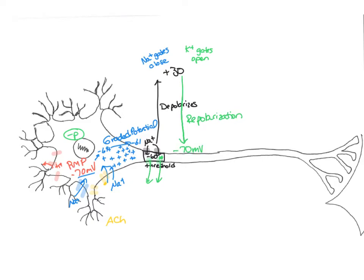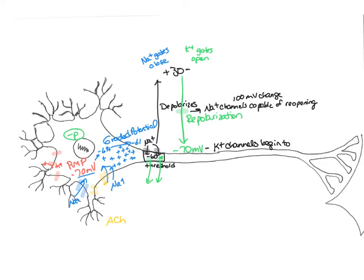Midway between positive 30 and negative 70 millivolts — a 100 millivolt change — there will be a point where the sodium channels become capable of opening again, even though they're still closed. This is the beginning of the relative refractory period, where another charge could cause another action potential but would probably take a bigger stimulus. At negative 70 millivolts, the voltage-gated potassium channels begin to close. Since they don't close at the same time, potassium continues to leak out and the charge drops to negative 90 millivolts.